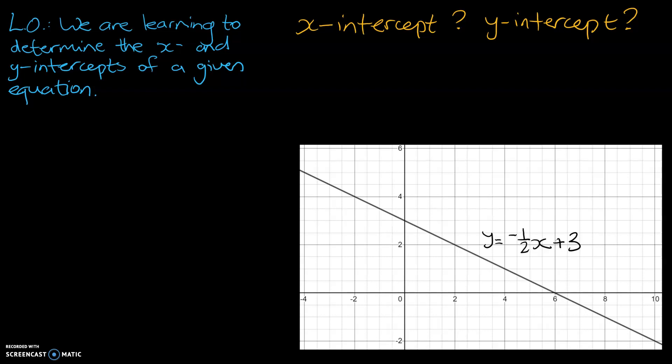These are the points of our graph where they touch the respective axes. For example, this point here, that is where our straight line, or our linear line, intercepts the x-axis.